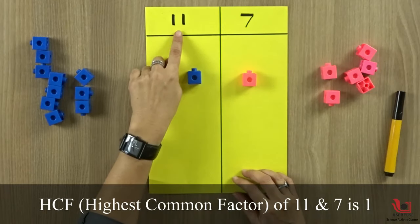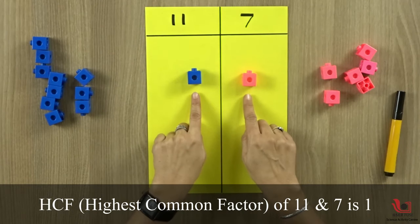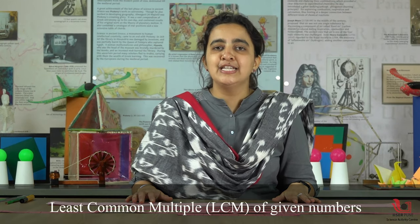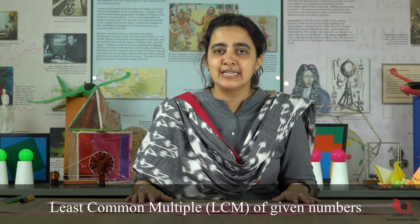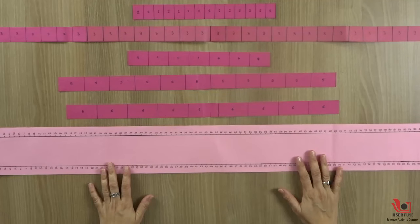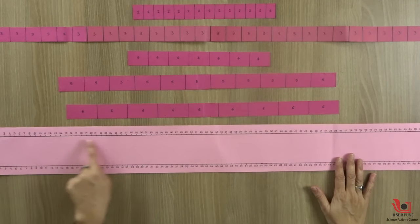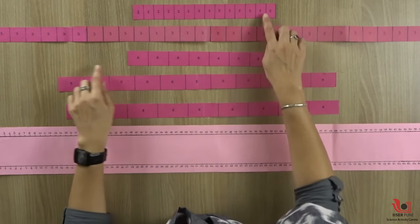So the HCF of 11 and 7 is 1. Now let us see how to find the least common multiple, that is the LCM of given numbers. For this we will need to cut some strips like this. This is a strip where I have marked the centimeter scale on both the margins.